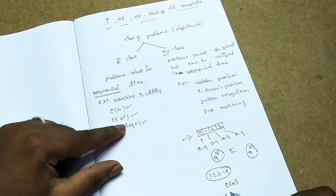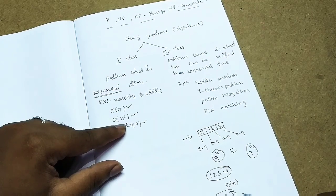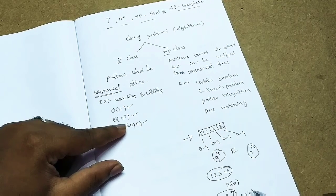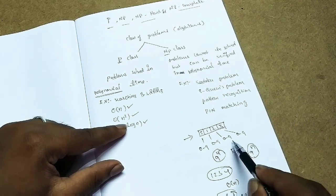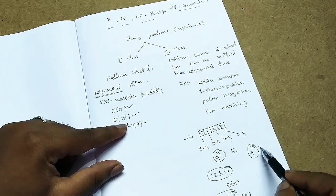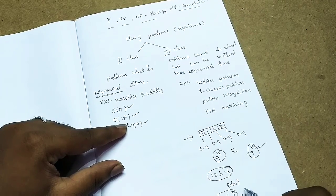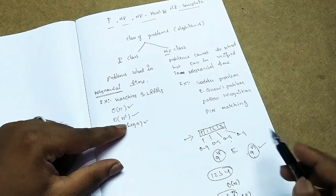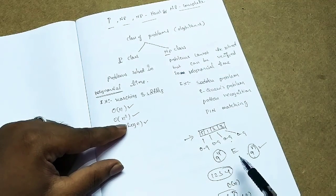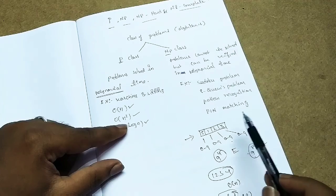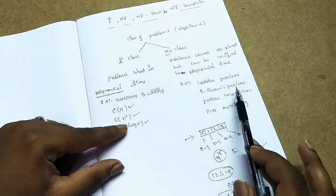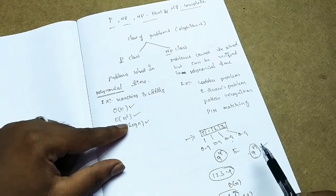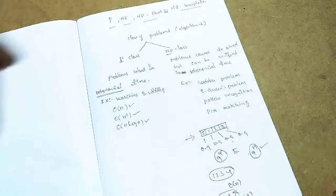If I give a candidate answer like 5, 1, 2, 3, it verifies and says yes or no — that check runs in order of N. So this is exponential time to solve but verifiable in polynomial time. Problems like pattern matching, pattern recognition, the 8 queens problem, and the subset sum problem fall under the NP class.